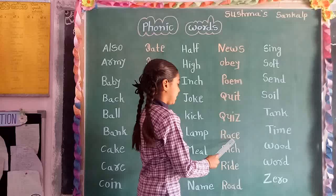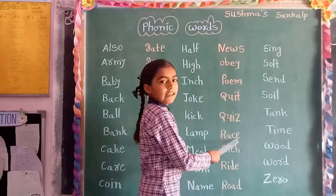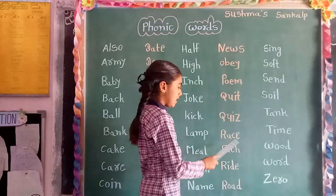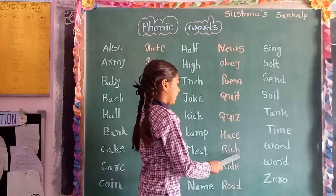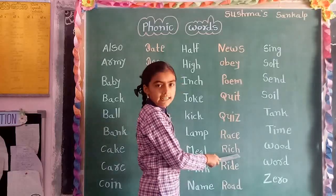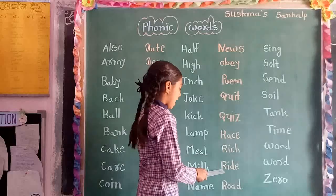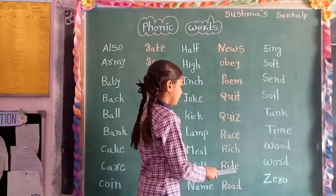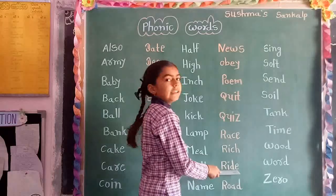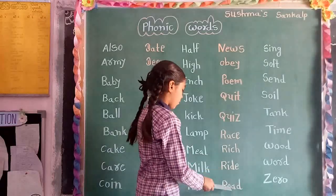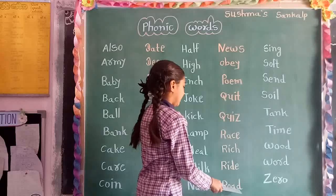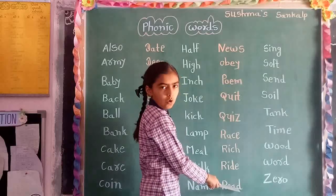R, A, C, E. Rest. R, I, C, H. Reach. R, I, D, E. Ride. R, O, A, D. Road.